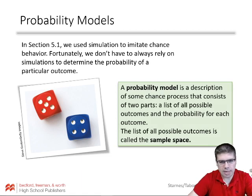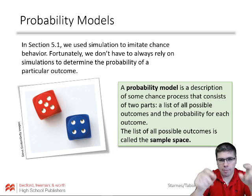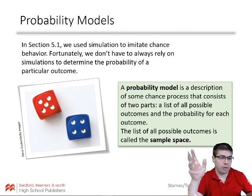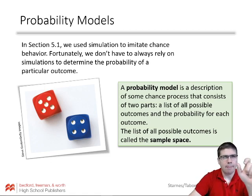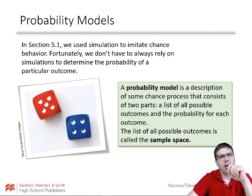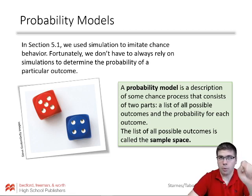If we roll a die, we have six possible outcomes. If the die is fair, we have a probability for each of those outcomes — it would be one-sixth, assuming we have a fair die. If I flip a coin, my possible outcomes are just those two outcomes, heads or tails. And if it's a fair coin, they're each one-half. But they're not necessarily equal — it doesn't have to be that.